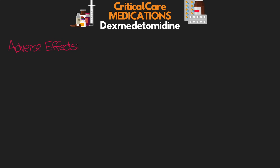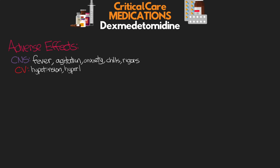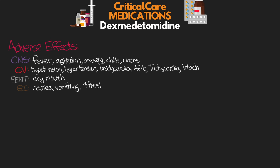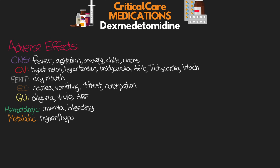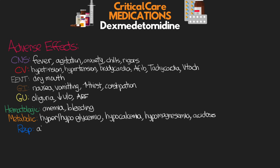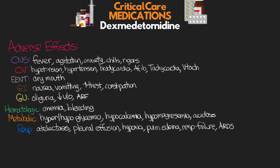As far as adverse effects go, for our central nervous system we're looking at fever, agitation, anxiety, chills, and rigors. For cardiovascular: hypotension, hypertension, bradycardia, atrial fibrillation, tachycardia, and ventricular tachycardia. For ENT, potentially dry mouth. For GI: nausea, vomiting, increased thirst, and constipation. For GU: oliguria, decreased urine output, and acute renal failure. Hematologic: anemia and bleeding. Metabolic: hyper- and hypoglycemia, hypocalcemia, hypomagnesemia, and acidosis. For respiratory: potentially atelectasis, pleural effusion, hypoxia, pulmonary edema, respiratory failure, and ARDS. These aren't typically things we see very often, but definitely something to be looking out for.